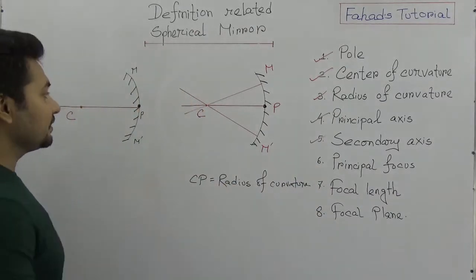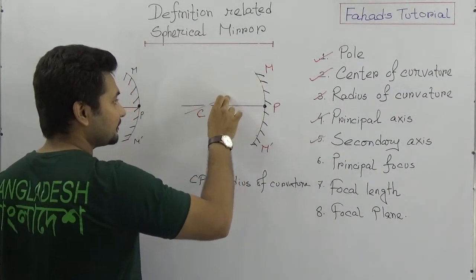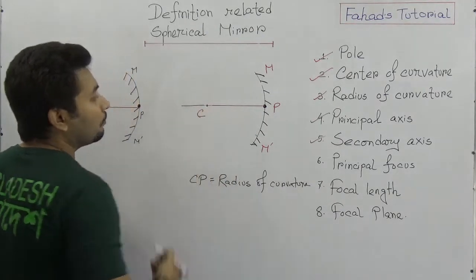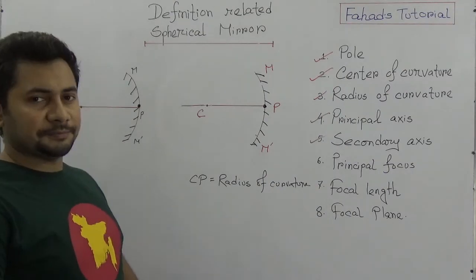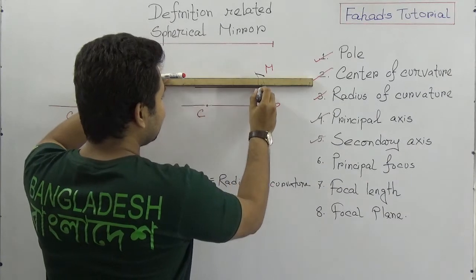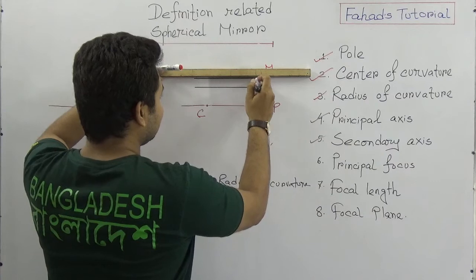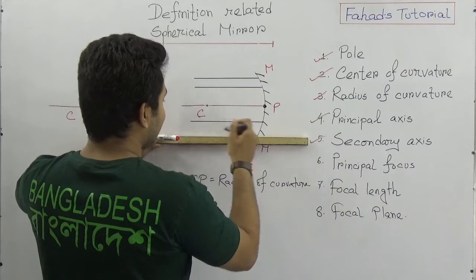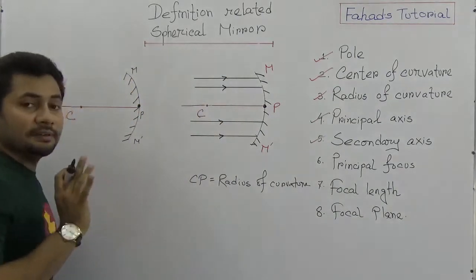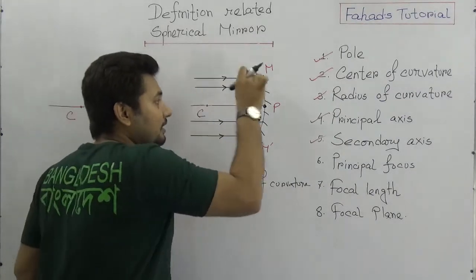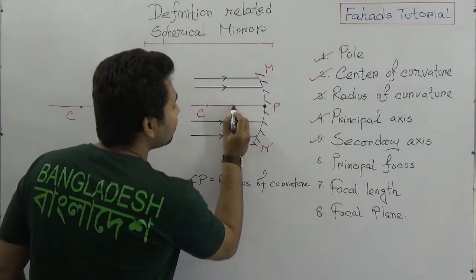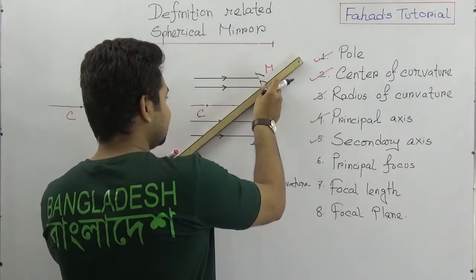Now think about the principal focus — this is the main point. Consider parallel rays parallel to the principal axis falling into the concave mirror. We assume four rays parallel to the principal axis are falling on the concave mirror. After reflection, they will converge at a point.